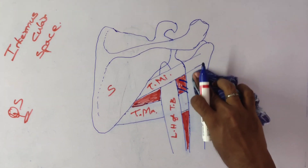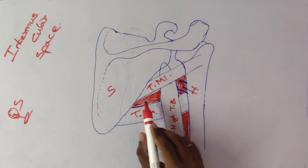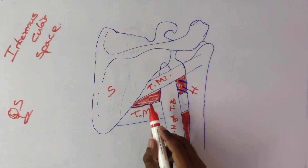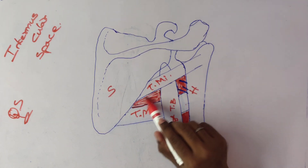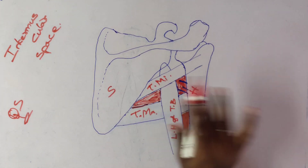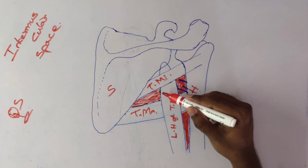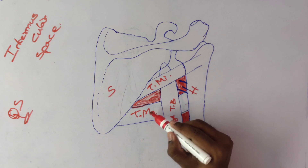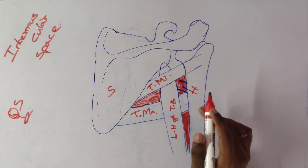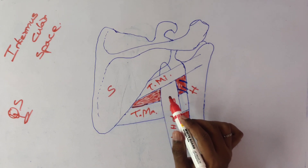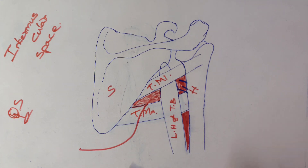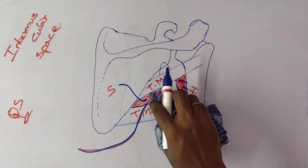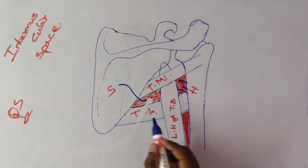Now coming to the upper triangular space: it has only three boundaries because it is triangular in shape. The superior border is the inferior surface of teres minor. The lateral side is the long head of triceps brachii, with no medial side as it forms an apex. At the inferior surface is teres major muscle. The content of the upper triangular space is the circumflex scapular artery, which goes to the scapula.